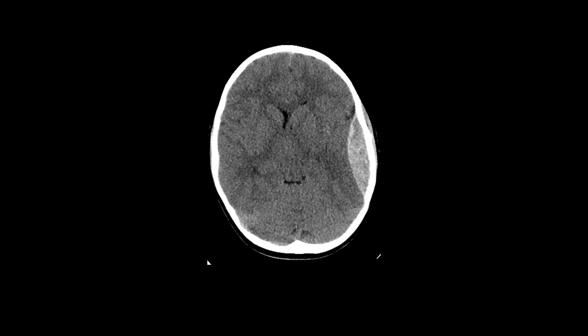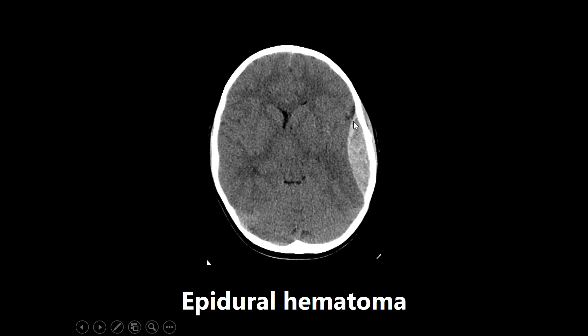This next image is an example of an epidural hematoma, seen right here — most medical students know this because it's really popularly tested. It has a biconvex or lens shape, which you can see nicely here. It's also high yield to know the cause: rupture of the middle meningeal artery. Do not get thrown off by the middle cerebral artery — it is the middle meningeal artery whose rupture causes an epidural hematoma.